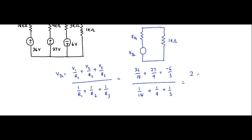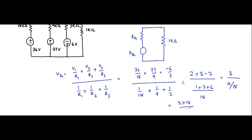This gives us (2 plus 3 minus 2) divided by (1 plus 2 plus 6)/18, which is 3 divided by 9/18. So it is 3 times 18/9, which equals 6 volt. VTH is 6 volt, with polarity plus-minus.